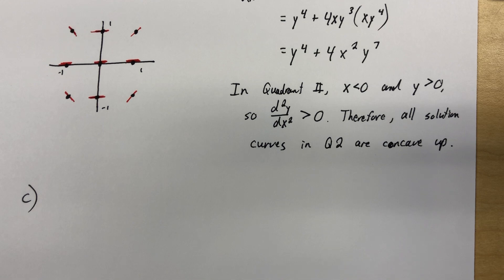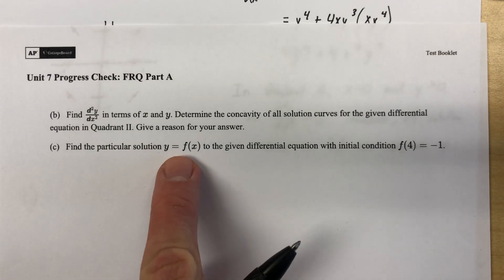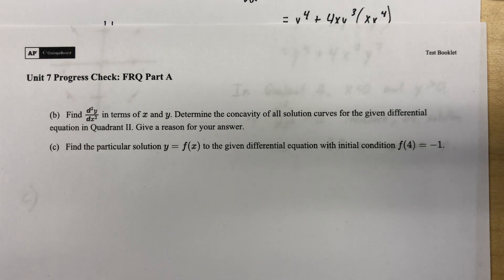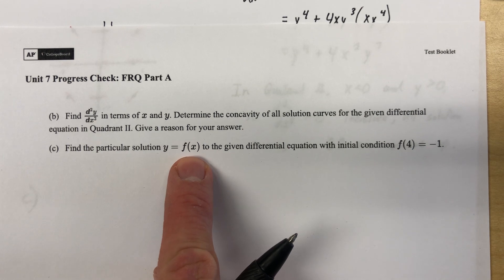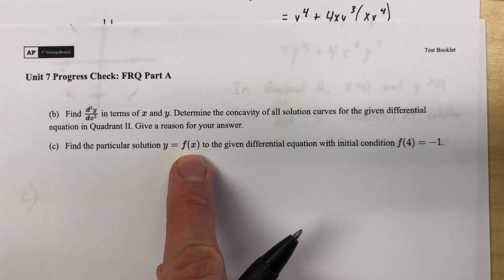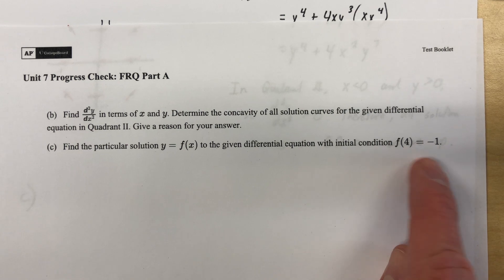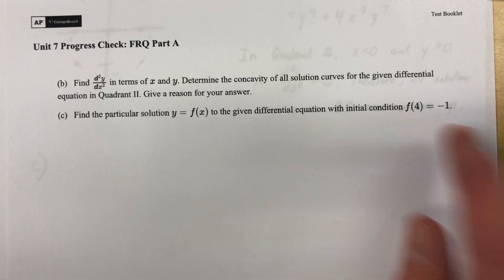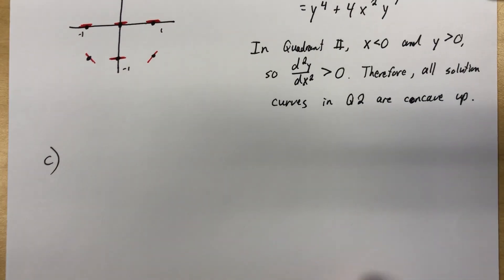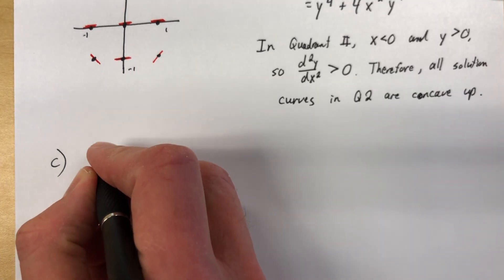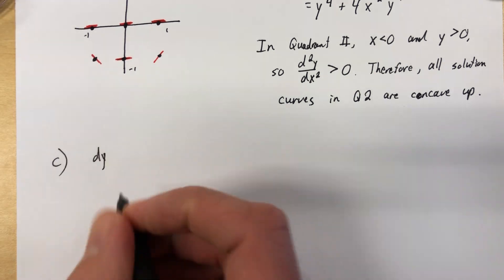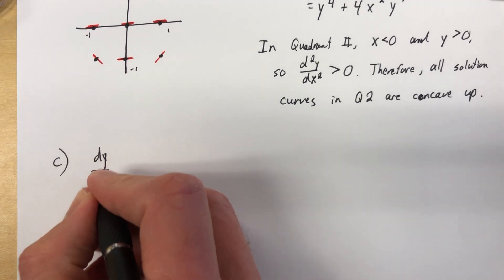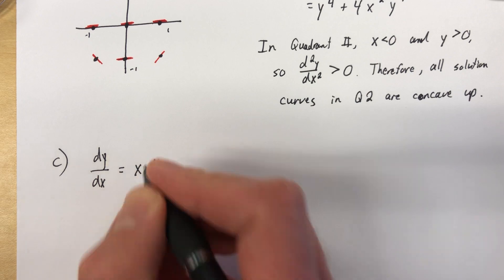Now things get a little bit tricky, but not too bad. Find a particular solution, y equals f of x. Let's just stop right there. They gave us a differential equation and they're asking us to solve it for y. Like, specifically solve it for y. And then they gave us an initial condition. And initial, often we think of, like, well, then x equals 0. Well, they gave us some place to start, and this is our starting place. So let's figure it out.